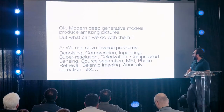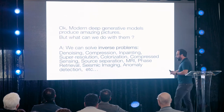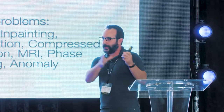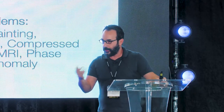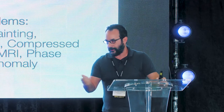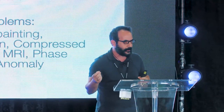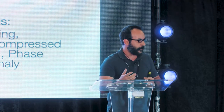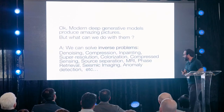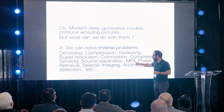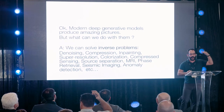For example, you can denoise real data, fill in missing data, compress your data, or do super resolution — if you have a noisy or blurry image you can increase the resolution. There are already super resolution pipelines shipping in Android imaging. You can do colorization of old black-and-white photographs, compressed sensing, tomographic problems like accelerating MRI, and seismic imaging — all using a generative model trained to imagine data.